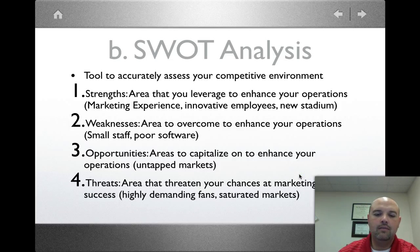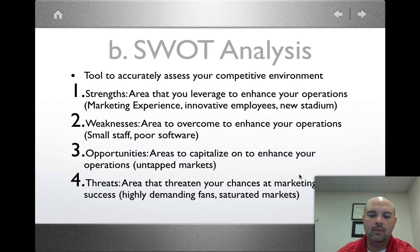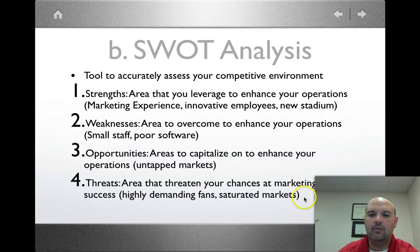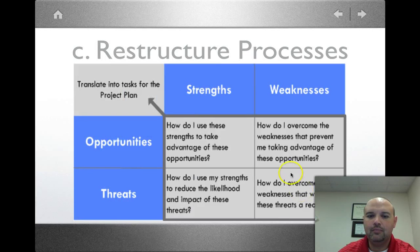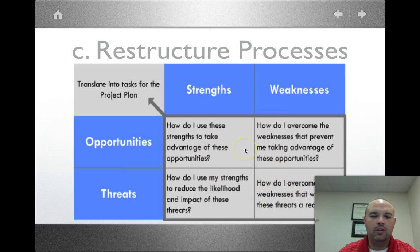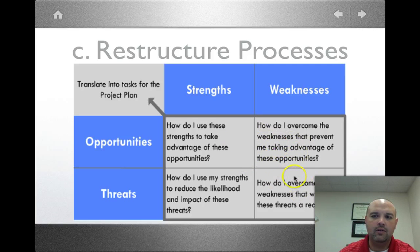Threats are things that could derail what you want to do — maybe your fans are expecting more than you can deliver, or you have too many competing teams in your area. You have to figure out what's a threat to your business. There's also a SWOT grid chart that helps you restructure your strategy — for example, how do you use your strengths to take advantage of opportunities? We'll talk more about this on Thursday.